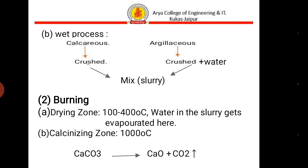The second step is burning. Burning is done in a rotary kiln and completes in three zones: the drying zone, the calcining zone, and the burning zone. In the drying zone, water gets evaporated from the slurry at a temperature of 100 to 400 degrees centigrade.